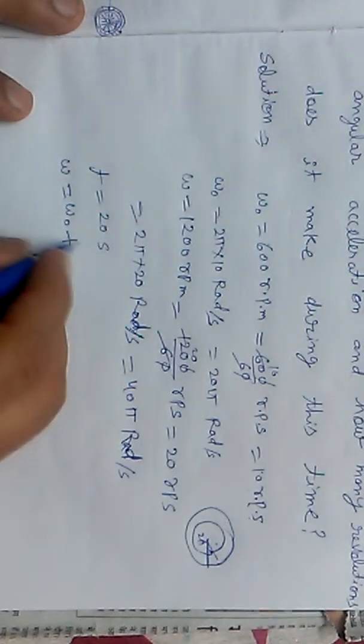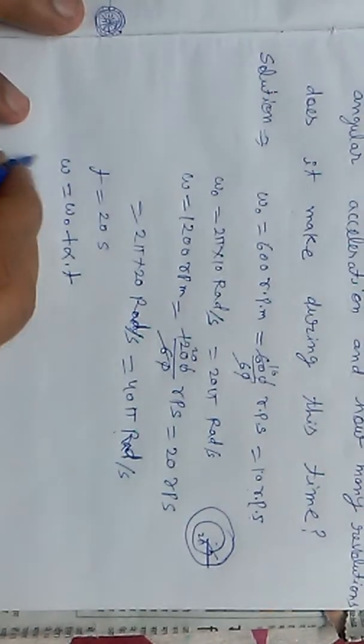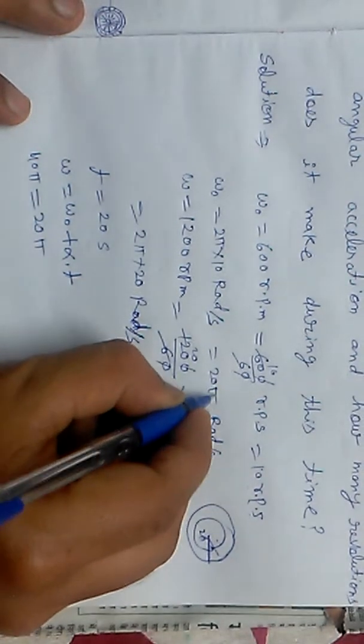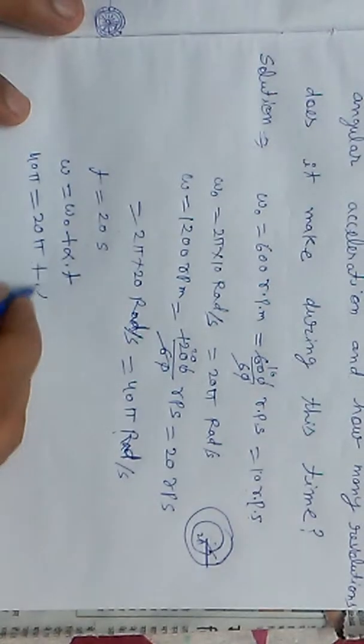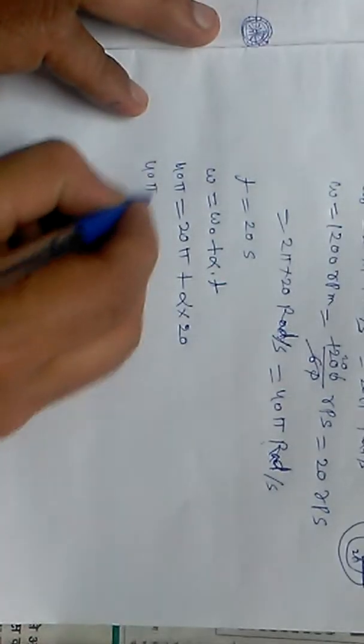Using omega equals omega not plus alpha times t, we have omega value is 40 pi, omega not value is 20 pi, plus alpha times t value 20. Transpose to the left hand side: 40 pi minus 20 pi.